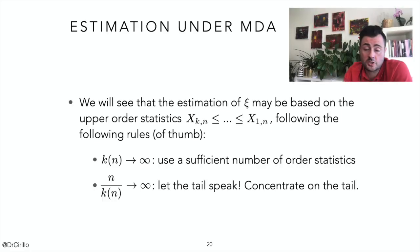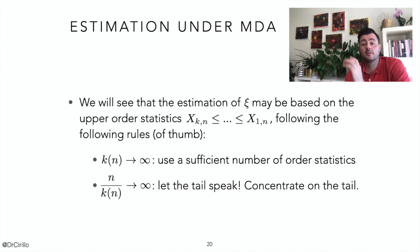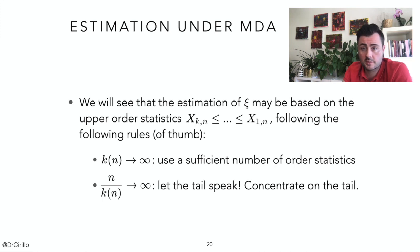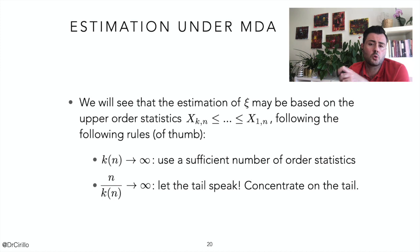The estimation of the Xi parameter can be performed just by looking at a certain number of upper-order statistics — let's say the top K order statistics. So we will consider the maximum, the second maximum, the third maximum, until we reach the K-th maximum. The problem is to decide what the value of K is.